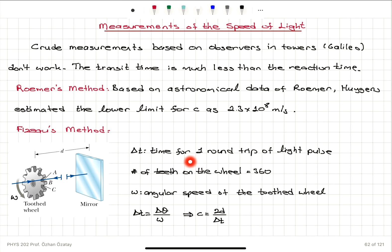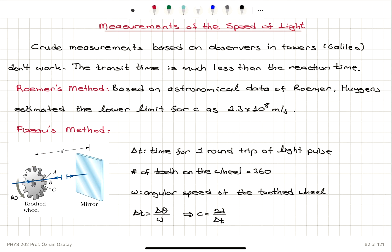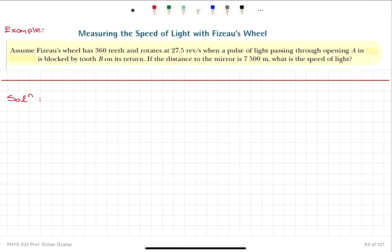Delta T is the transit time for one round trip of the light pulse, and the number of teeth on the wheel is 360. The transit time delta T equals the angular displacement delta theta of the tooth wheel divided by omega, the angular speed. If the returning light hits an obstacle instead of passing through — meaning we don't see the reflection — that corresponds to a 1/720 revolution turn. From the known angular speed we calculate the transit time, and since the total travel distance is 2D, the speed of light is 2D divided by delta T.